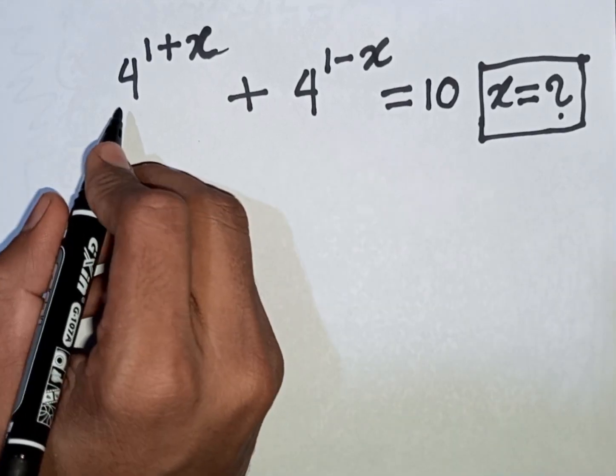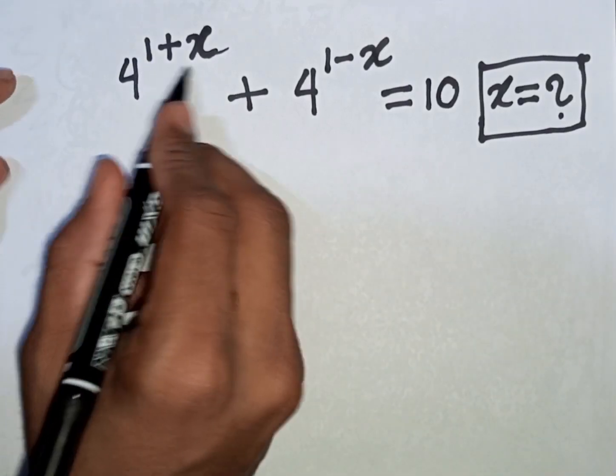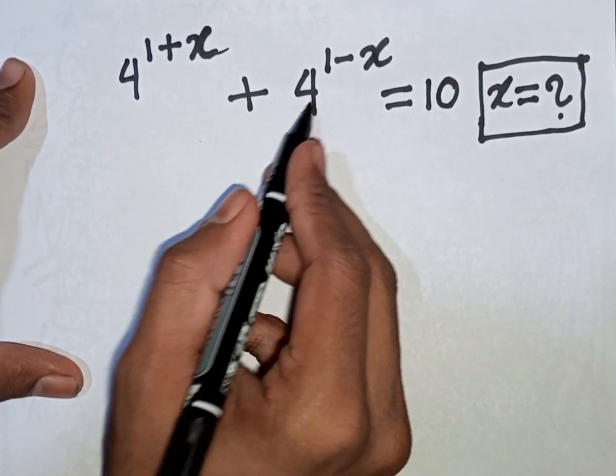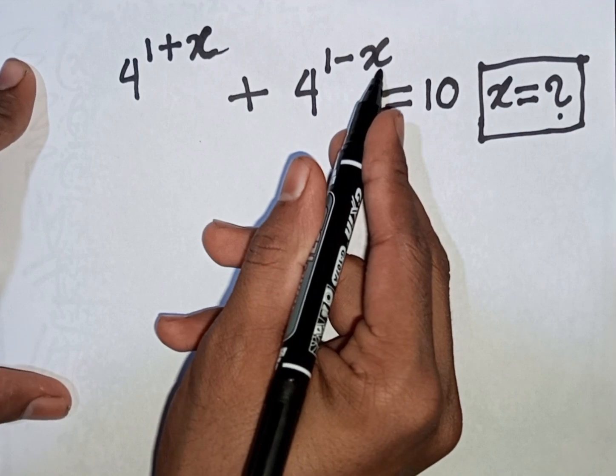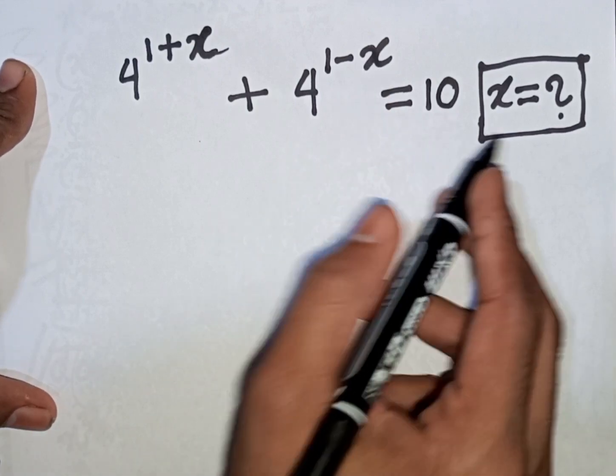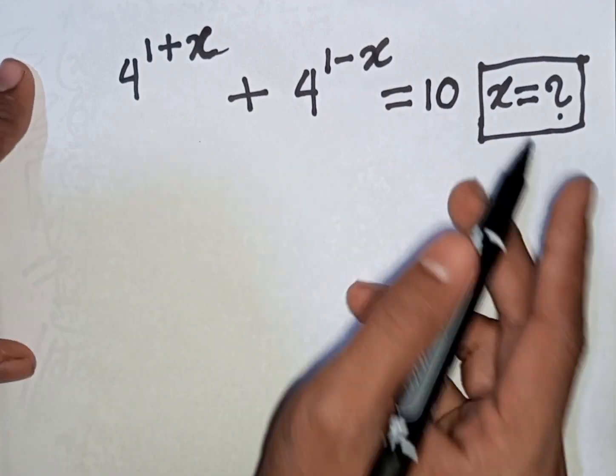How to solve 4 power (1 plus x) plus 4 power (1 minus x) is equal to 10. Find the value of x.